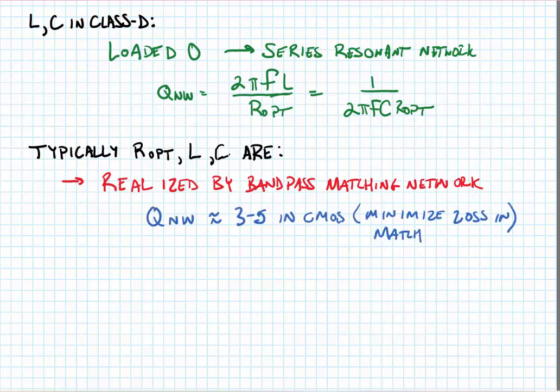Losses arise because the passive components have finite quality factors. So, in our design, we would choose r opt, which would set P out, and then we would find the L and C based upon a network quality factor that was reasonable.